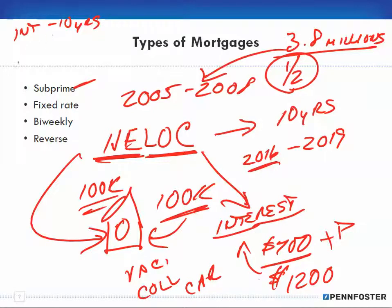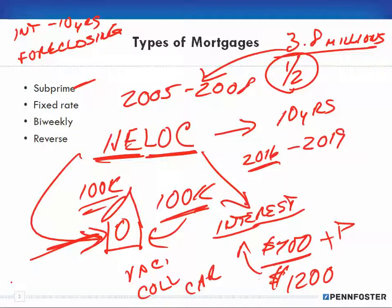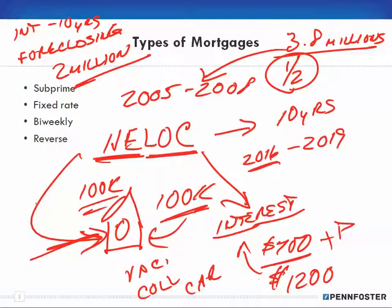That means we're back to the same issue as the subprime — the bank collects 10 years of interest and then forecloses on the houses. People who once owned their house free and clear, thinking they were set for retirement, will have those houses taken away. We're talking in the neighborhood of two million people who may end up homeless or without a home, forced to rent, all due to poor financial knowledge.